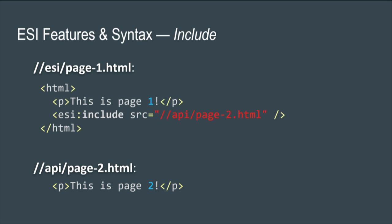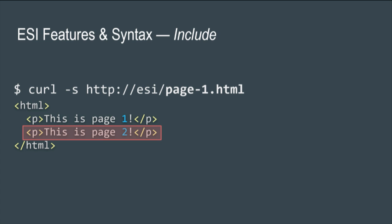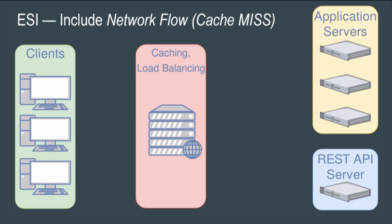Two things can happen: a cache hit or a cache miss. On a cache hit, the ESI engine replaces the tag with the content of page2. If not cached or the entry is invalidated, the ESI engine makes a side request for that file to fill in the blanks. Whatever happens, the end user gets the content filled in by the engine.